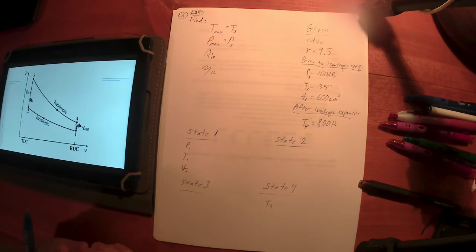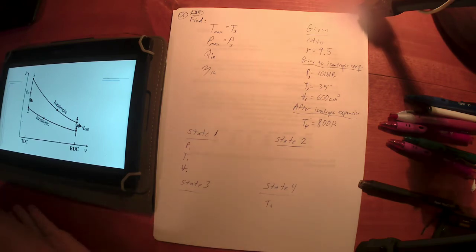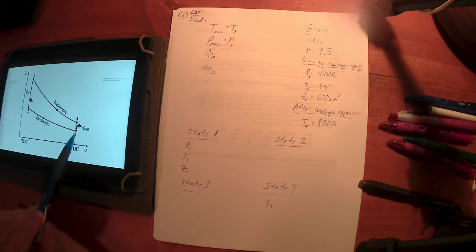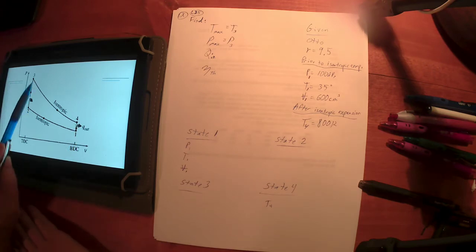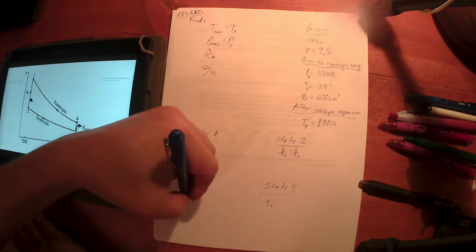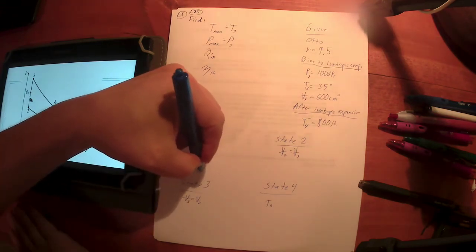Is anything constant between the states? By definition of the Otto cycle, between states 1 and 4 there's constant volume heat rejection, and between states 2 and 3 there's constant volume heat addition. So V2 equals V3, and V4 equals V1. We know V1 numerically — it was given — and that tells us V4 equals V1 as well.